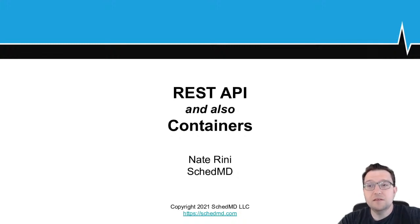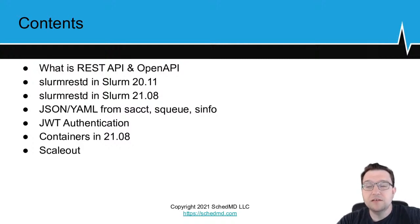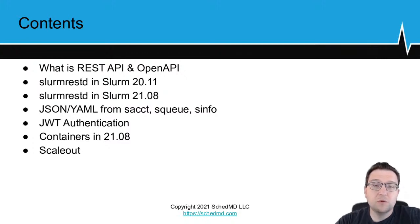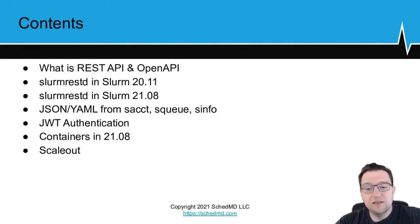Now for the REST API and containers. I will briefly cover what is the REST API and OpenAPI, since I have presented this in detail before. I will discuss the changes in Slurm 20.11 and Slurm 21.08, the new feature of sAccount, sq, and sInfo being able to output JSON and YAML, more details on JSON Web Tokens for authentication, then containers, and a brief reminder about scale-out. I have a lot to cover so I will go pretty quick.